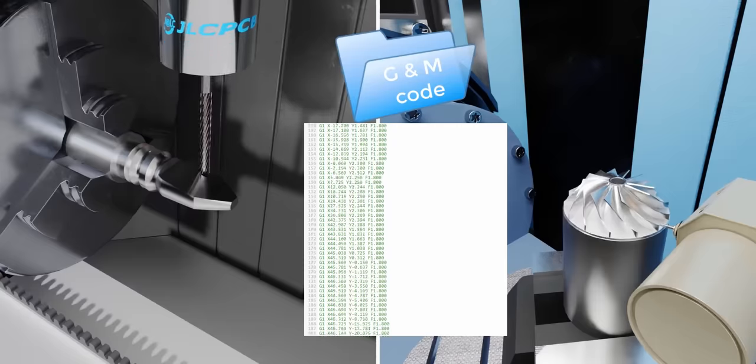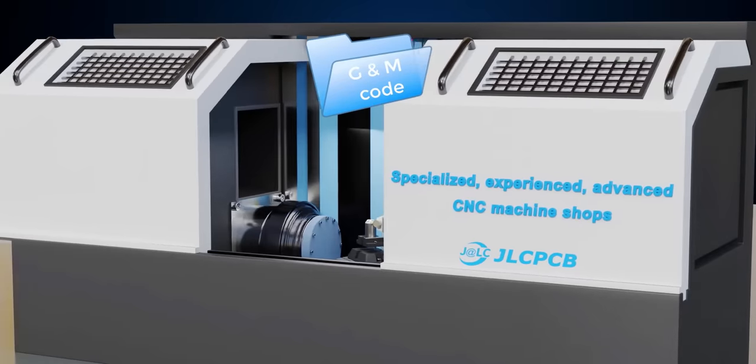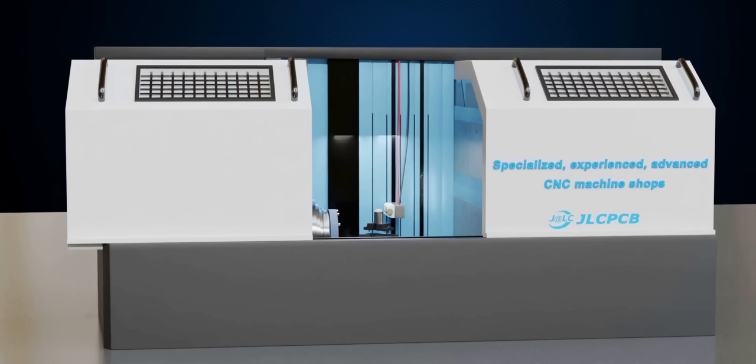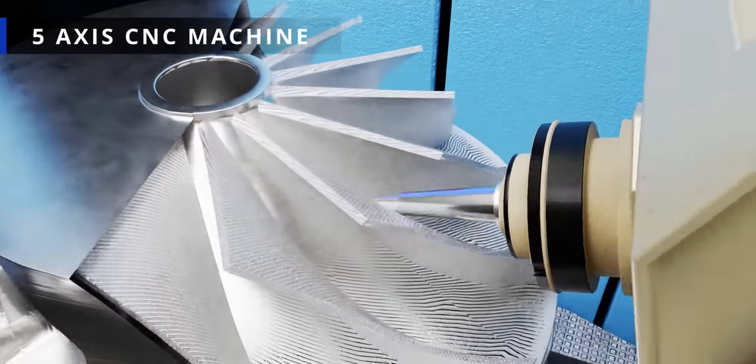Later we'll go over what G and M stand for. Let's see what happens when you feed this code to a CNC machine. The movement the tool is doing is beautiful, but it's slightly difficult to understand.